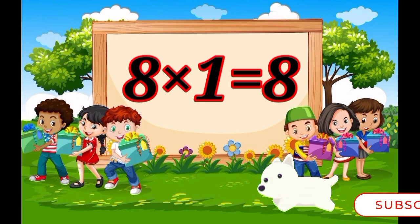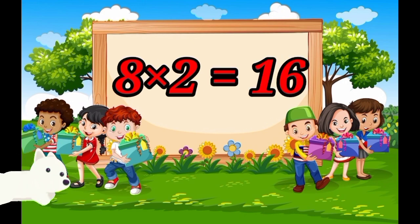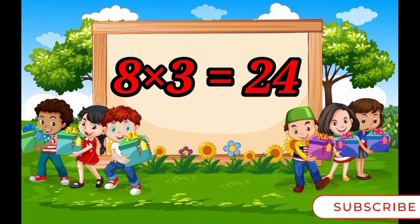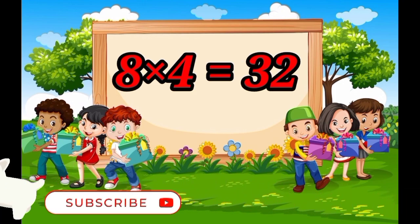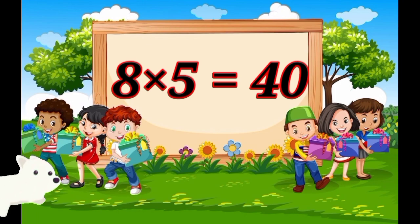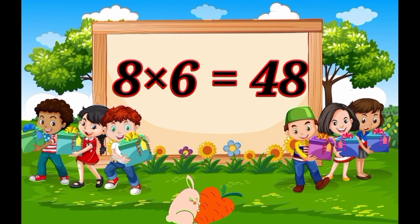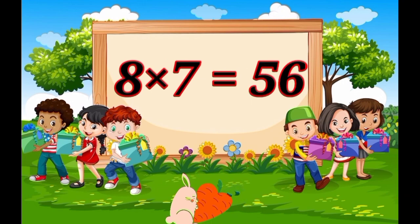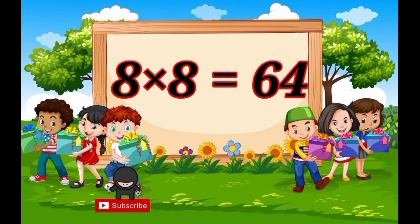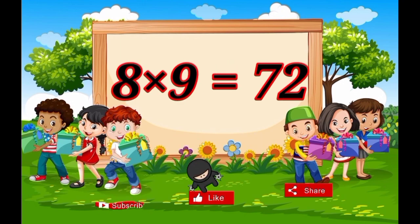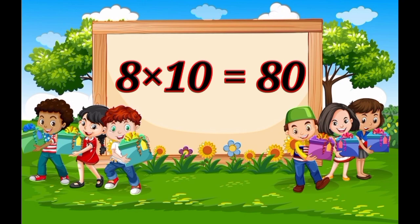Eight ones are eight, eight twos are sixteen, eight threes are twenty-four, eight fours are thirty-two, eight fives are forty, eight sixes are forty-eight, eight sevens are forty-eight, eight sevens are seventy-six, eight eights are sixty-four, eight nines are seventy-two, eight tens are eighty-three.